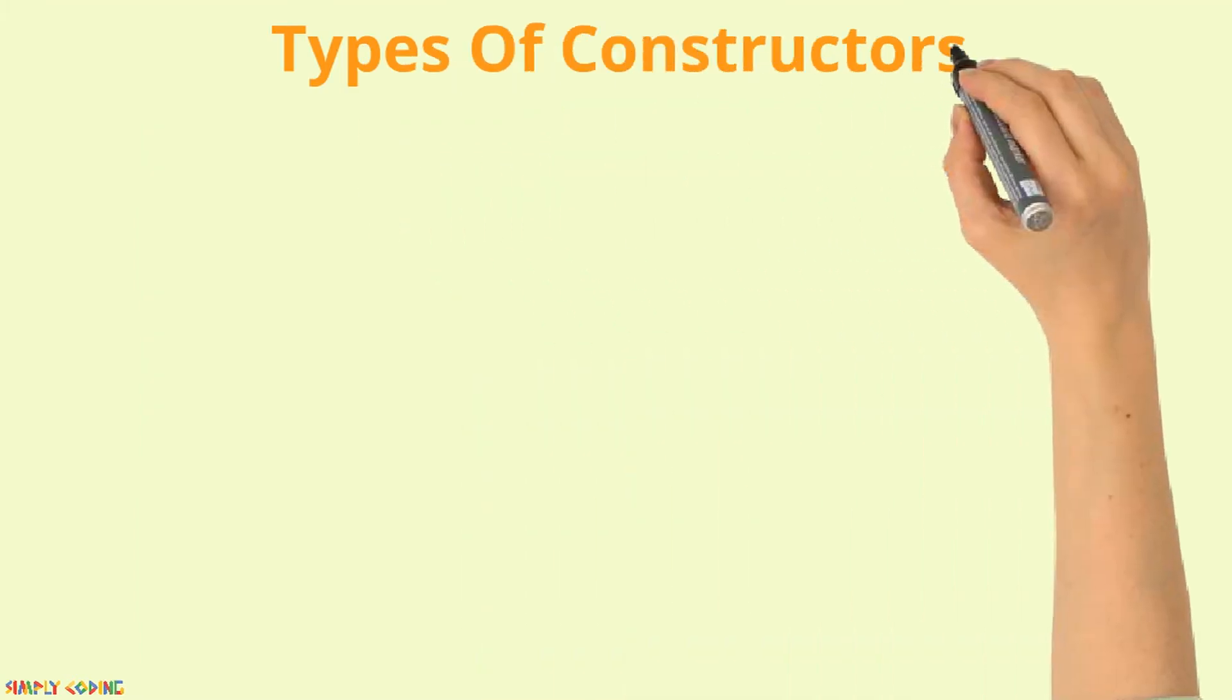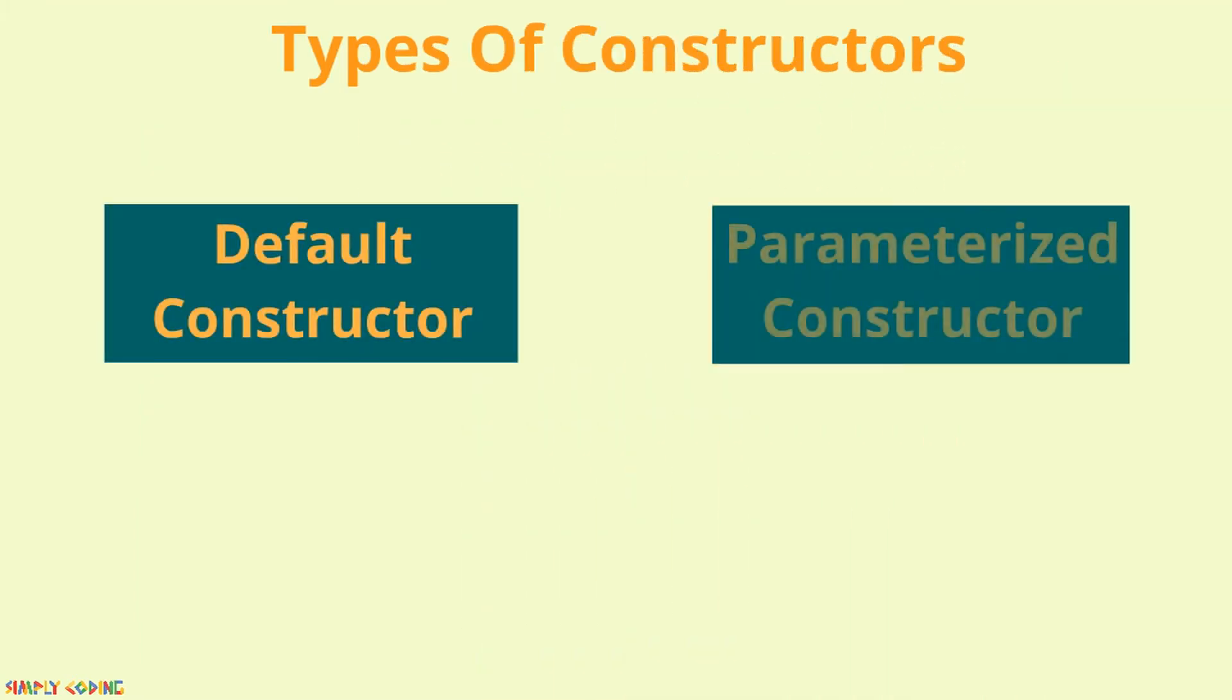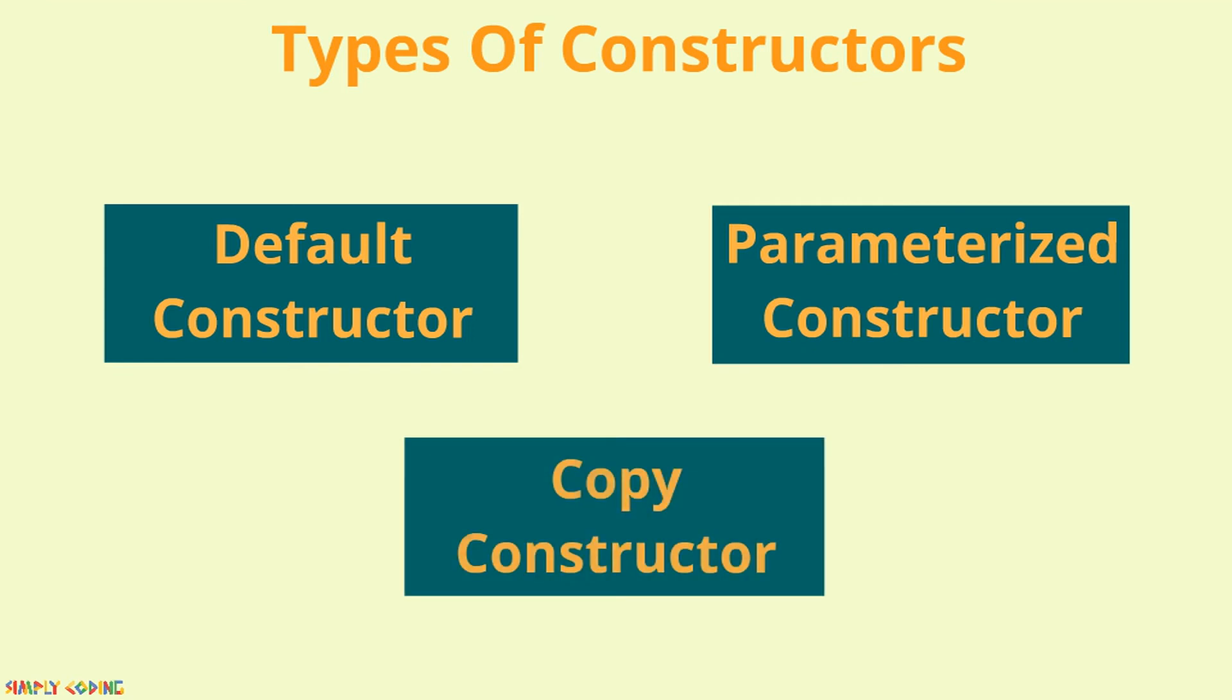There are three types of constructors: default constructors, parameterized constructors, and copy constructor. Let us learn about each of them.